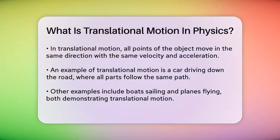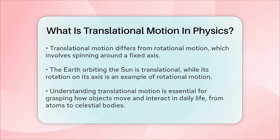Translational motion is different from rotational motion, where an object spins around a fixed axis. For instance, the Earth orbiting the Sun is an example of translational motion, while the Earth spinning on its axis is rotational motion.